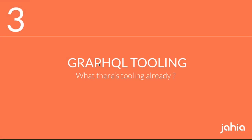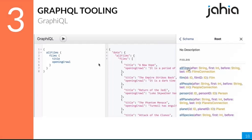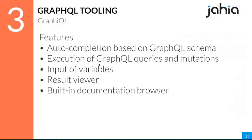On tooling: you've seen GraphiQL, which is used inside GraphQL Hub — it's a React component that makes it very easy to write queries or mutations, test them, view results, and browse documentation. As a React component it's reusable anywhere. Features include autocomplete based on the schema, execution of queries and mutations, a variable input panel, a result viewer, and a built-in documentation browser.